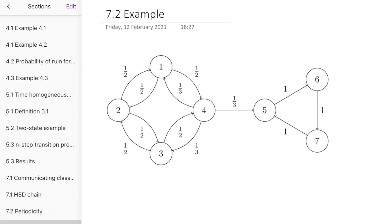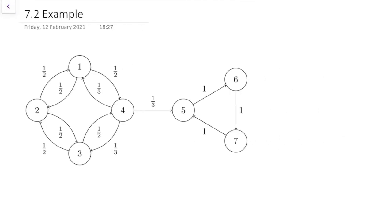Here's a more interesting example. Let's look at the right-hand side first. We've got this kind of cyclic behaviour where we go from 5 to 6 to 7, to 5 to 6 to 7, to 5 to 6 to 7, all those steps with certainty. So we've got a cycle of length 3 going on on the right-hand side — that's period 3 over there. Because from state 5 it takes 3 steps to return to 5, then 6, then 9, then 12, then 15, and the greatest common divisor of all those is 3, because they're all divisible by 3. So all these states on the right-hand side have period 3.